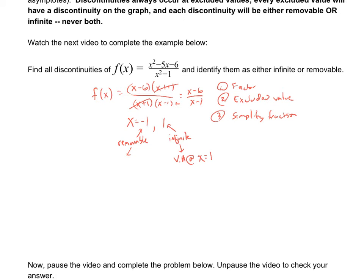If you plug that negative 1 into the simplified version, you would get negative 7 over negative 2, which is 7 halves. That's what the y value would be if negative 1 wasn't an excluded value. So that's where you're going to put the hole. It's going to be at negative 1, what you get when you plug that number into the simplified version. So this is a hole at negative 1, 7 halves.